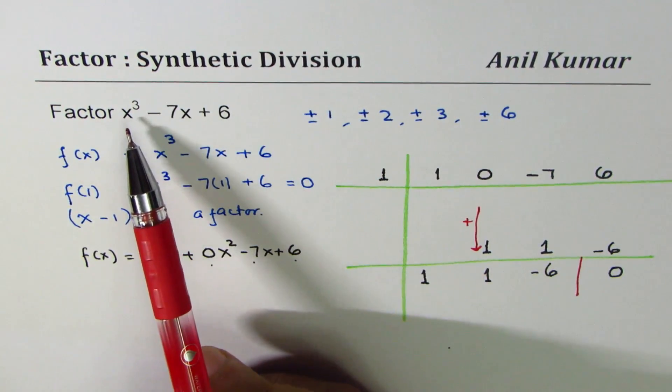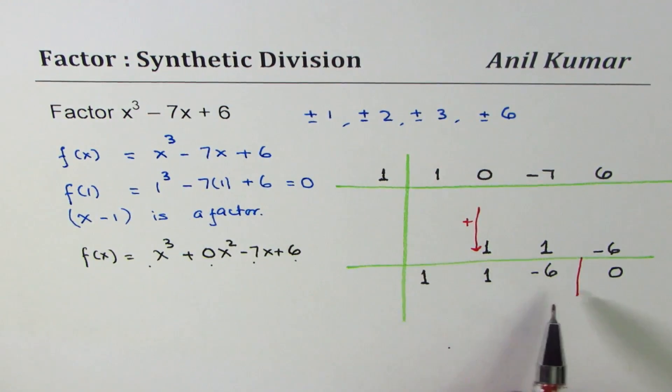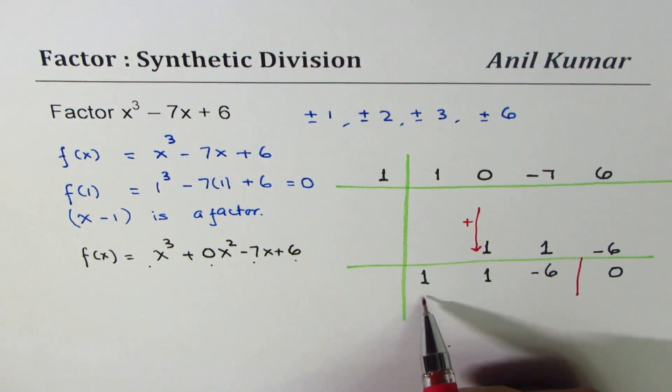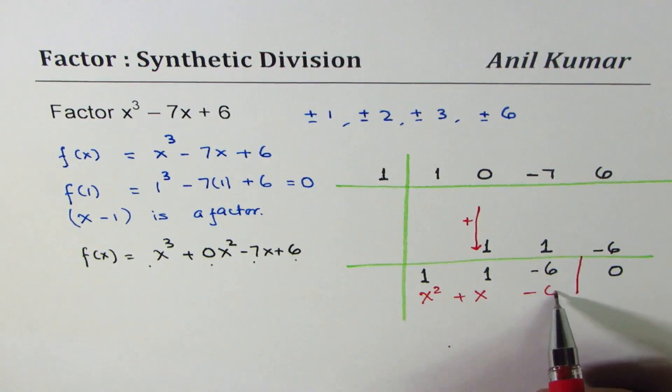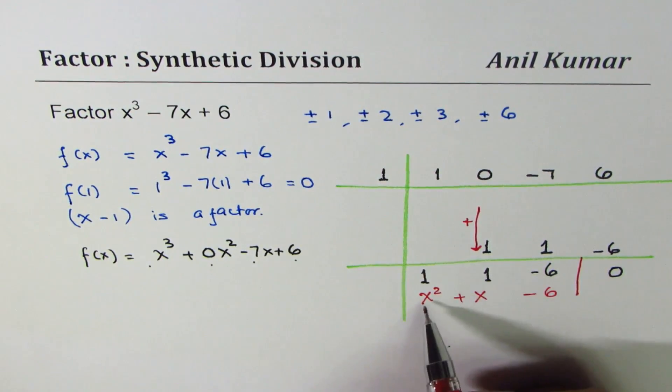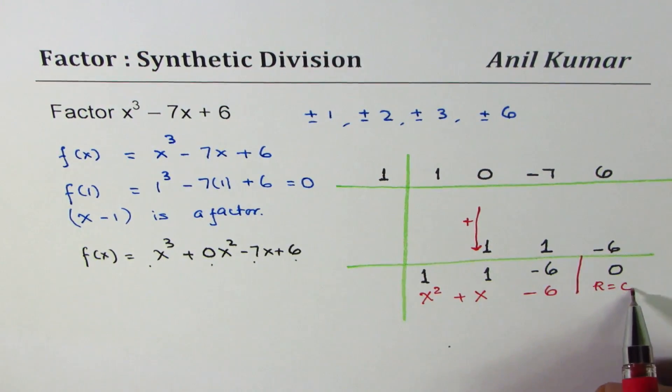Whenever you divide a cubic function by a linear function, you expect a quadratic function. So now we get a quotient here. This is x² + x - 6. The coefficient of x is 1. Coefficient of x² is 1. And that is the result. And the remainder equals 0.